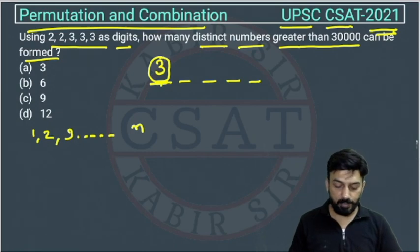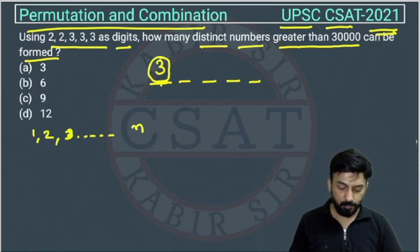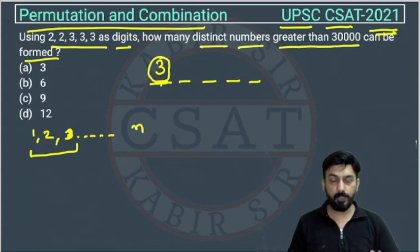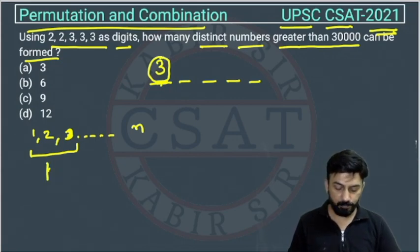And out of these N objects, these few, suppose P number of objects, P number of objects are of same type. And these are of same type. This is R. So the formula is: